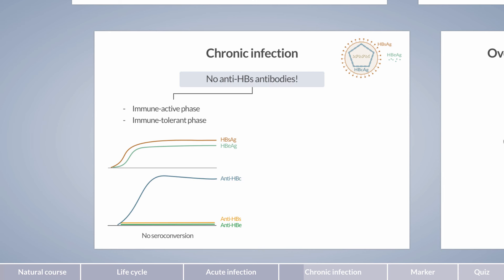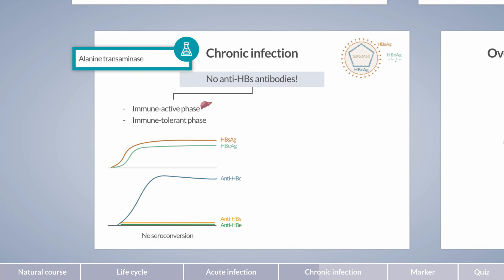So what is the difference between immune-active and immune-tolerant chronic hepatitis B? The presence of liver cell inflammation in this constellation indicates an active phase of chronic infection. On the contrary, minimal inflammation in the liver with a very high viral load indicates the immune-tolerant phase. A reliable marker of hepatocellular injury is the enzyme alanine transaminase, in short ALT, which can be detected in blood.